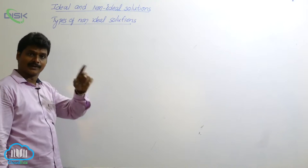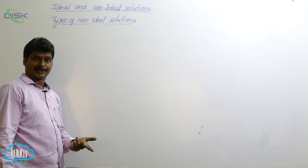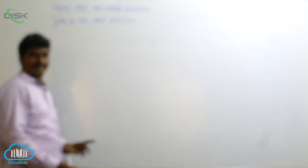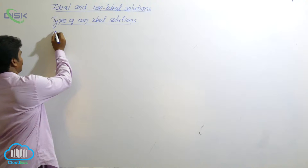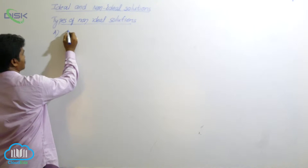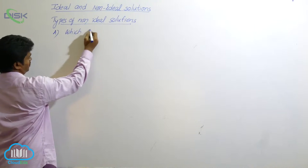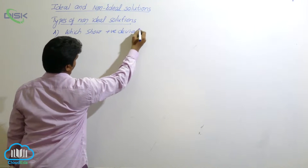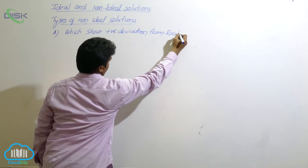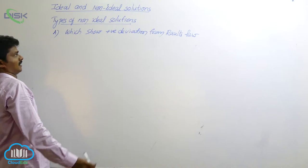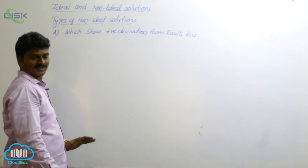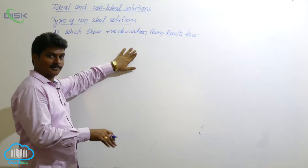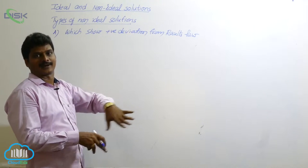Non-ideal solutions are classified into two types based on the total value of solutions observed. The first kind are solutions which show possible positive deviation from Raoult's law. In this case, the total vapor pressure of the liquid mixture is more than expected from Raoult's law.